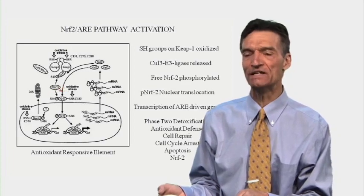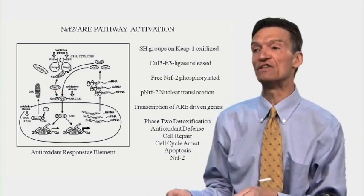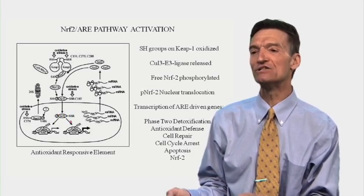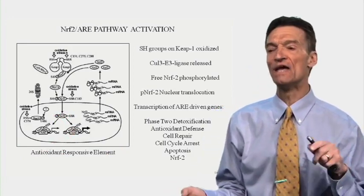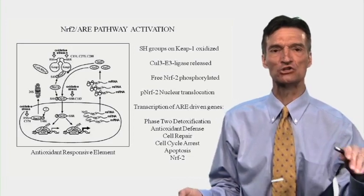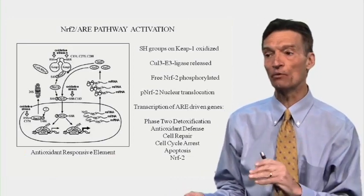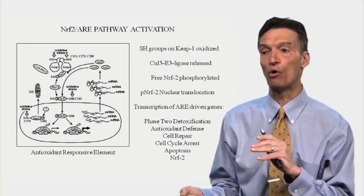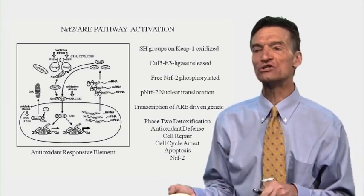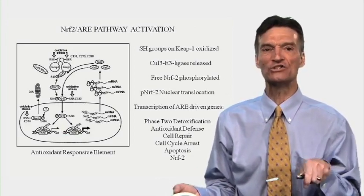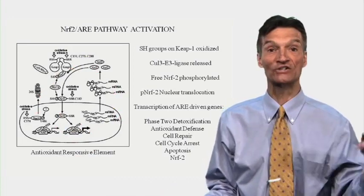Free Nrf2 can be phosphorylated by enzyme systems such as AMPK, which is activated by berberine. The phosphorylated Nrf2 enters the nucleus, binds the promoter site of a section of DNA called the antioxidant-responsive element, and begins to crank out enzymes involved in detoxification. Our phase 2 detox enzymes are coded by the ARE, as well as antioxidant defense, cell repair, cell cycle arrest, apoptosis, and more Nrf2. When the cell is assaulted by any toxin or oxidative stress, we start translocating Nrf2 into the nucleus, making defense molecules and more Nrf2 to augment our antioxidant defenses.